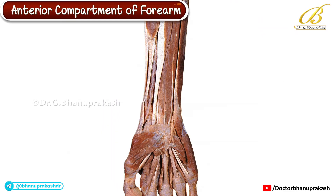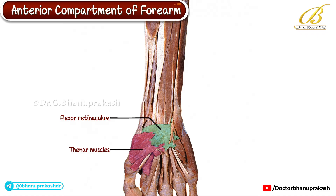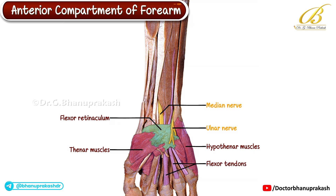In this video I'm going to demonstrate the anterior compartment of the forearm. This specimen shows the lower part of the forearm along with the palmar aspect of the hand. Here you can also observe the flexor retinaculum, which is located in the distal part of the forearm just before the wrist. On the lateral side at the base of the thumb you can see the thenar muscles forming the thenar eminence, and on the medial side near the base of the little finger are the hypothenar muscles forming the hypothenar eminence. Just medial to the hypothenar eminence you can identify the ulnar nerve, which lies superficial to the flexor retinaculum. The median nerve, on the other hand, passes deep to the flexor retinaculum along with the flexor tendons as it enters the palm through the carpal tunnel.